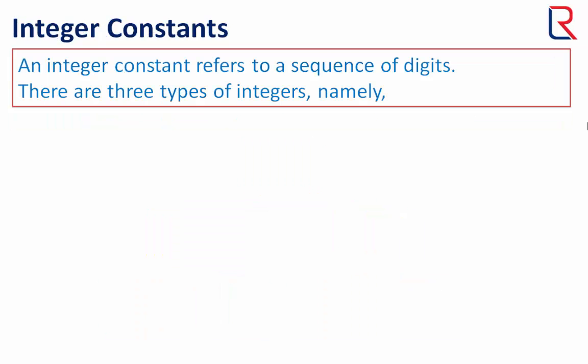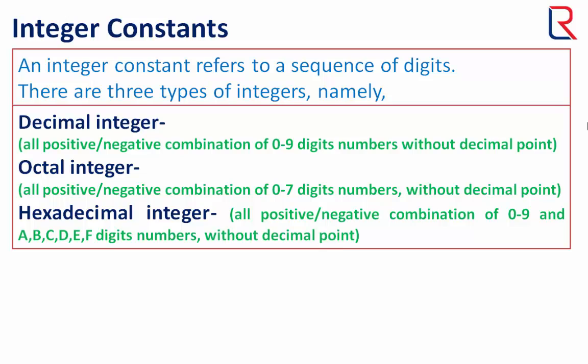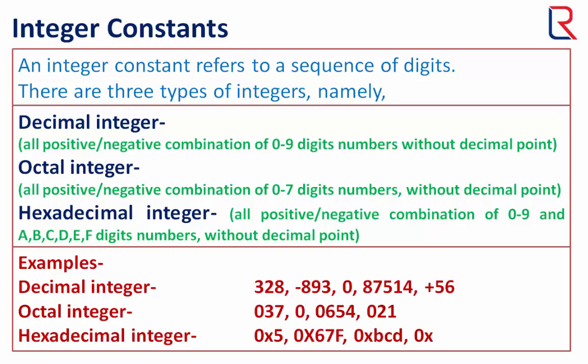Now let's see integer constants. An integer constant refers to a sequence of digits. There are three types of integers, namely: decimal integer, octal integer, and hexadecimal integer. Here are some examples of these. To represent the octal number we use 0 before the number, and to represent the hexadecimal number we use 0x or 0X before the number.